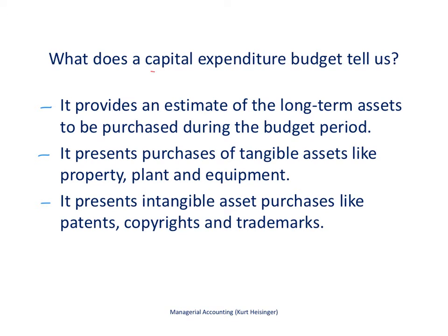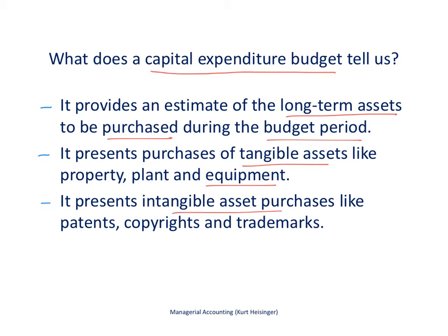We're going to start by talking about the capital expenditure budget and then move into the cash budget a little bit later. The capital expenditure budget provides an estimate of the long-term assets that we would like to purchase as a company during the budget period. For example, purchases of tangible assets like equipment, factories, or vehicles. It would also present any intangible asset purchases, such as buying a patent from another manufacturing company to use in our own manufacturing process. That would be included in the capital expenditure budget.